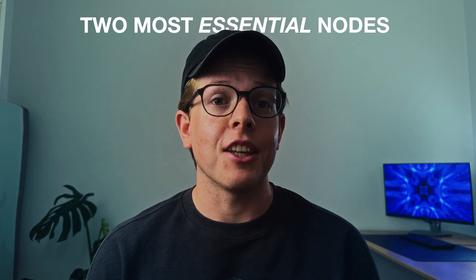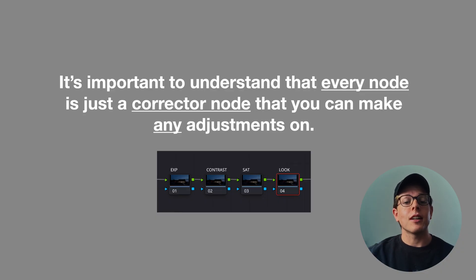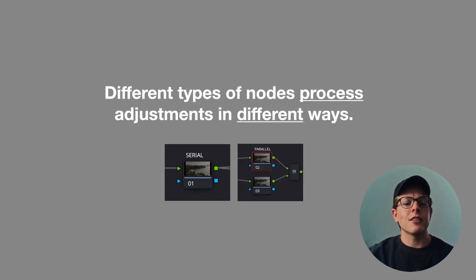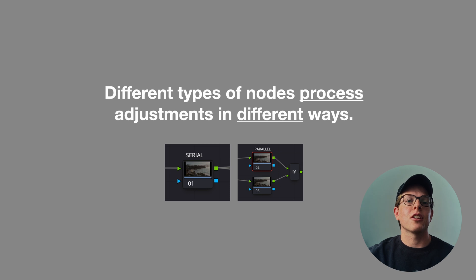Now that you're familiar with the node editor and the image processing pipeline, let's talk about the two most essential nodes: the serial node and the parallel node. Before we do, it's important to understand that every node is just a corrector node on which you can make any adjustments. Different types of nodes exist because they process adjustments in different ways and pass image data through the pipeline differently — not because you should make specific adjustments on specific nodes.